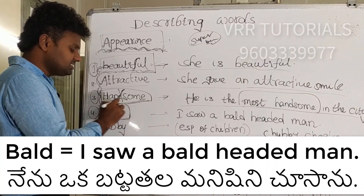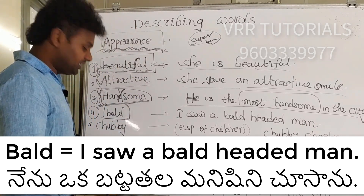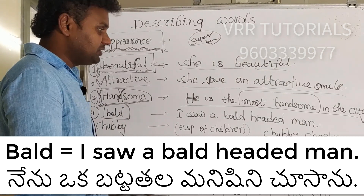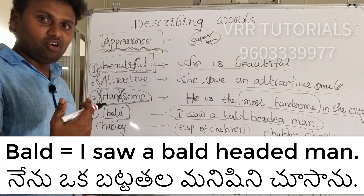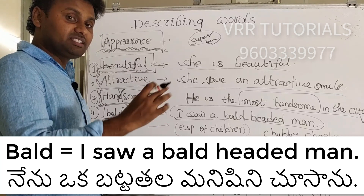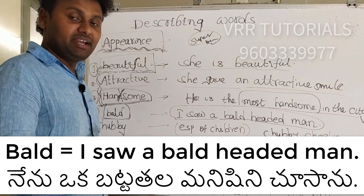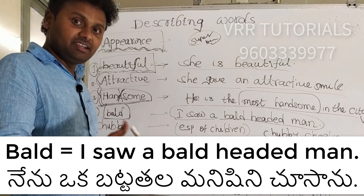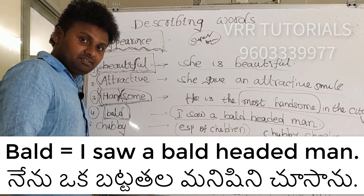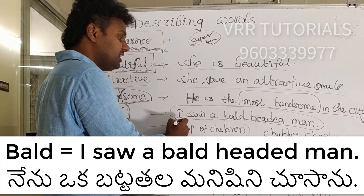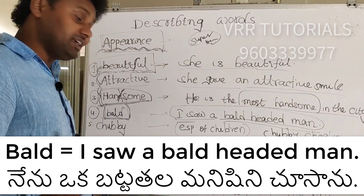The fourth word is 'bald' or 'bald-headed', meaning without hair on the head. For example: 'I saw a bald-headed man.' This describes a man who doesn't have hair on his head. So we say 'He is a bald-headed man' or 'I saw a bald-headed man.'